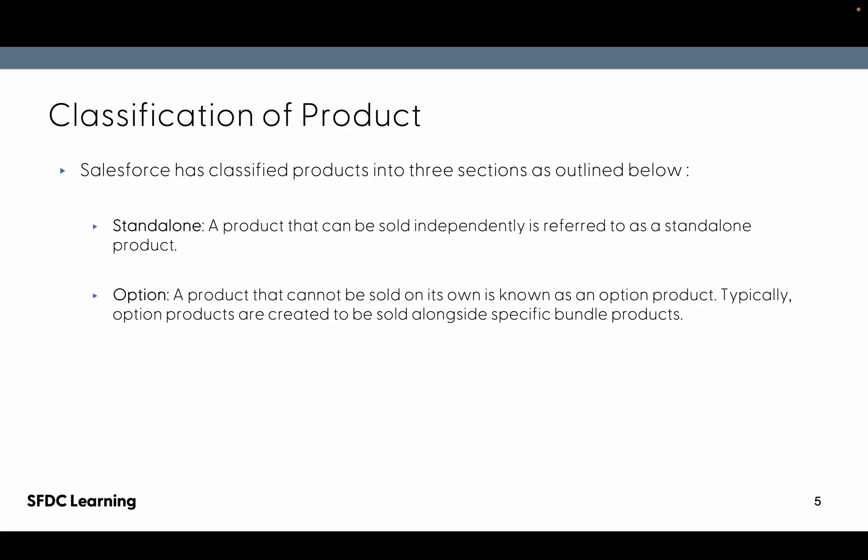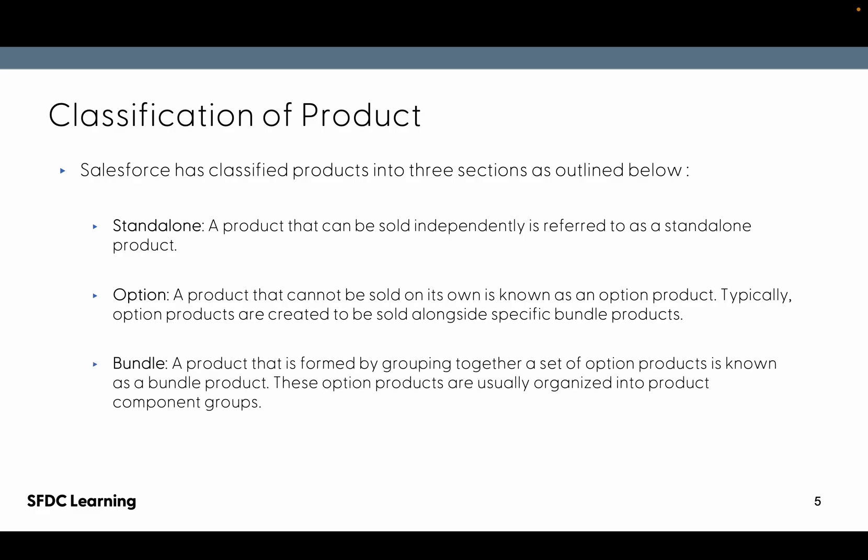The third classification is bundle. A bundle is a product formed by grouping together a set of option products. These option products are usually organized into product component groups, so there will be groups under which you can organize your option products. Right now we are going to cover standalone only; option and bundles will be covered in the next section.